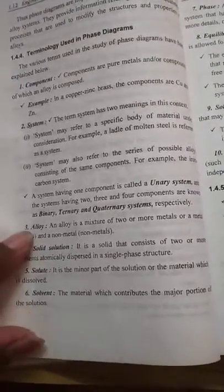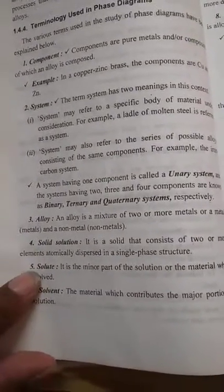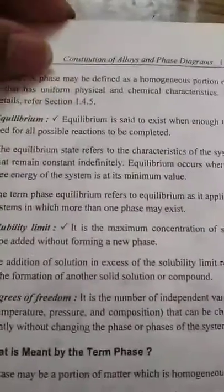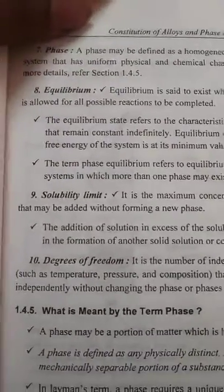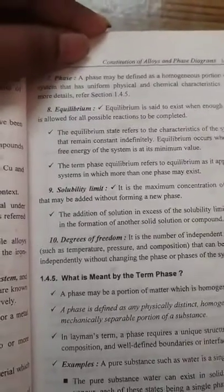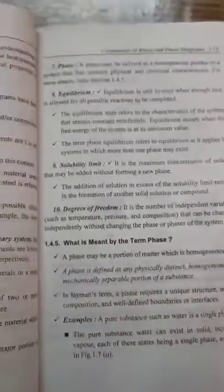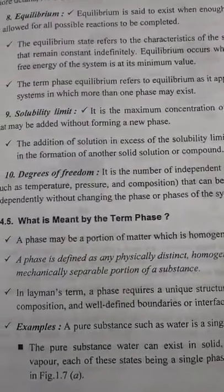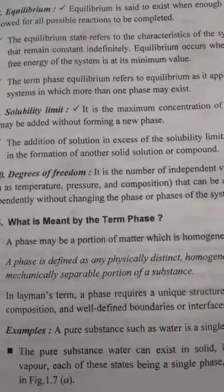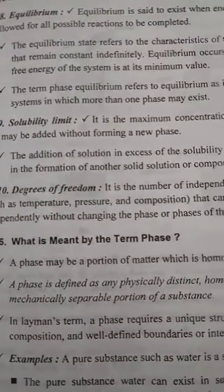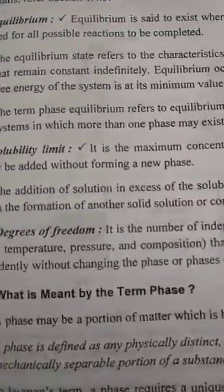An alloy is a combination of two or more metals. In a solid solution, the solute is the smaller portion and the solvent is the major portion of the material. A phase may be defined as a homogeneous portion of a system that has uniform physical and chemical properties. More precisely, a phase is any physically distinct, homogeneous, and mechanically separable portion of the system. For example, salt dissolved in water is a single-phase system where you cannot separate the salt from the water, just as you cannot separate hydrogen and oxygen from water.